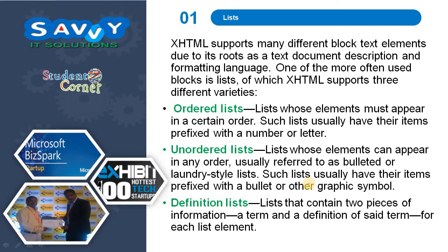The first one is ordered list — lists whose elements must appear in a certain order. Such lists usually have their items prefixed with a number or a letter.